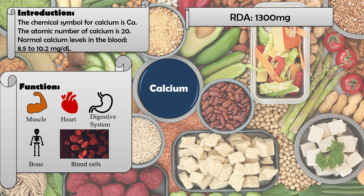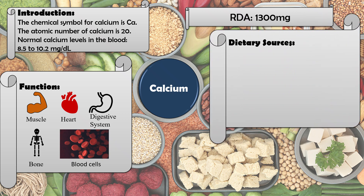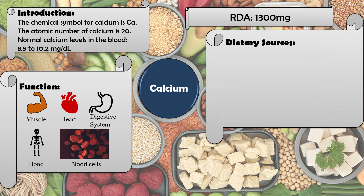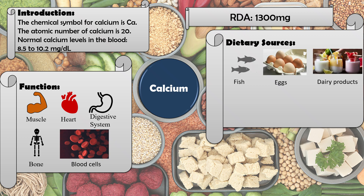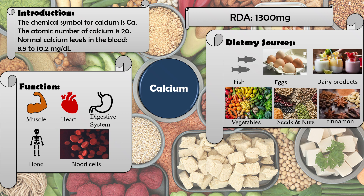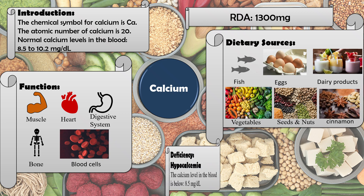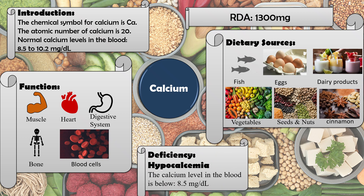Calcium also supports the synthesis and function of blood cells. The RDA for calcium is 1300 mg. Dietary sources include eggs, dairy products, fish, vegetables, seeds, nuts, and cinnamon. Deficiency of calcium is known as hypocalcemia, which occurs when calcium levels in the blood fall below 8.5 mg/dL.